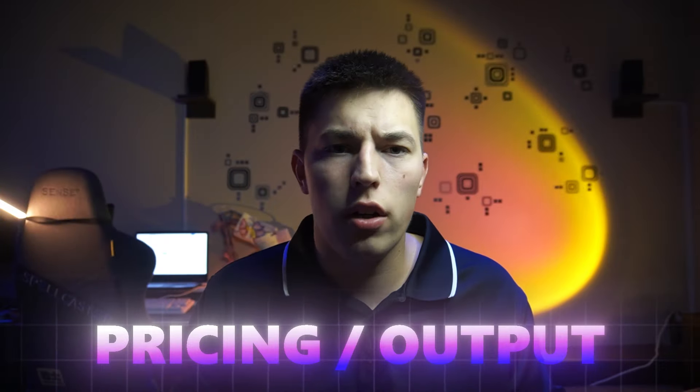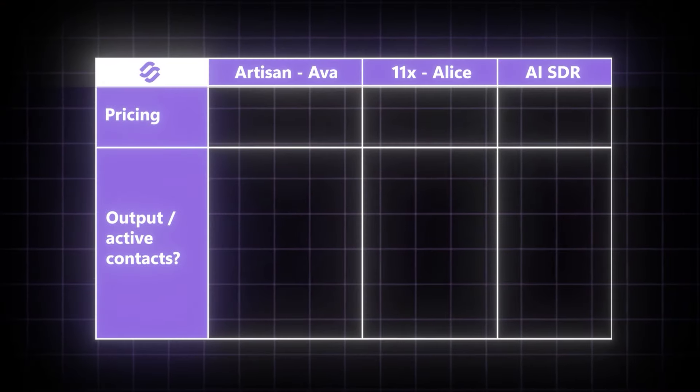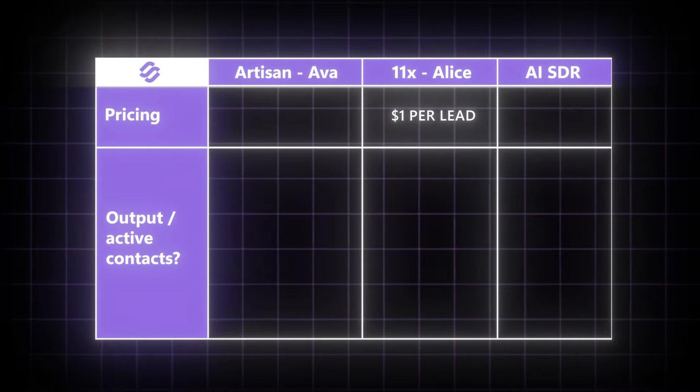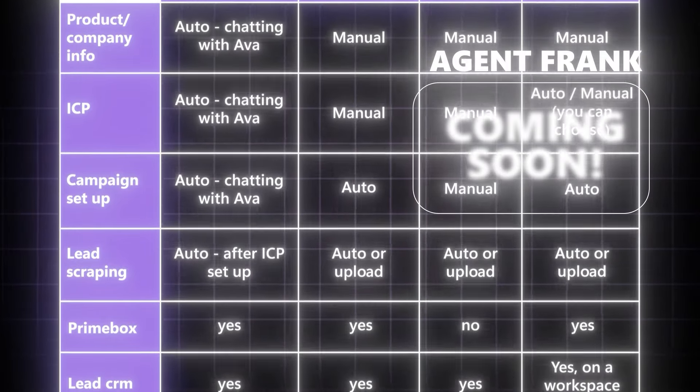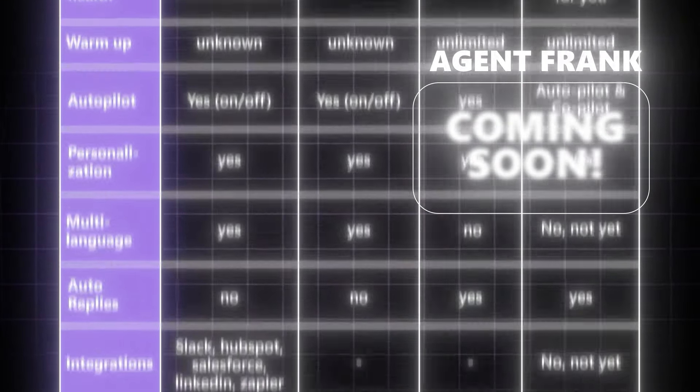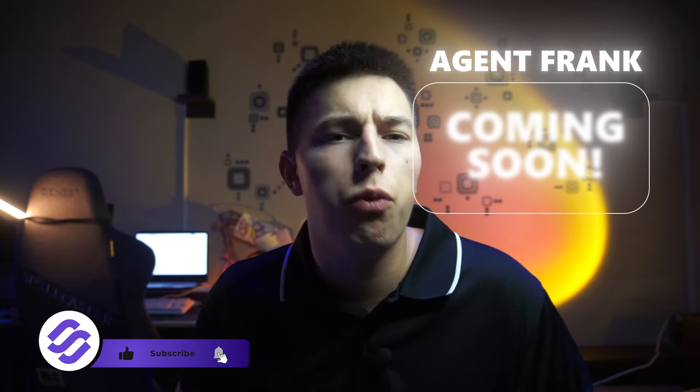Now for the most important part — how do these agents compare in pricing and their outputs? The pricing or output is not listed anywhere for Artisans' Ava or 11X's Alice, but you can expect to pay around $1 for every lead with 11X's Alice. For Artisans', well, who knows? However, AI SDR clearly states their pricing and output: a $750 per month plan will get you 1,000 emails sent. If you think 11X's pricing is not fair or Artisans' lack of auto-reply feature is a deal breaker, then I suggest you take a look at Agent Frank, an AI SDR made by Salesforce that beats all other AI agents in features while contacting up to 2,500 leads a month for a more affordable price starting at $499.